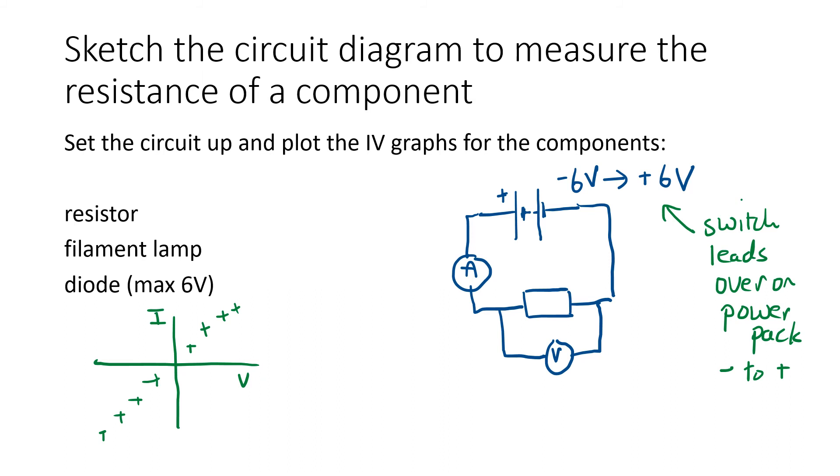The experiment that you would do in class, and you may well have done this at GCSE, is to set up this circuit and plot the IV graphs for the components: resistor, filament lamp and diode. For the diode, do not go above 6 volts.